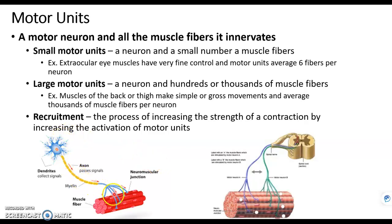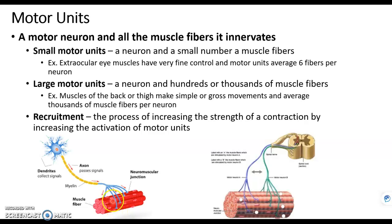Here we have a neuron and here we have muscle fibers. In previous videos we looked at the neuromuscular junction where the axon terminal meets up with a muscle fiber. In this image we see multiple — one, two, three, five — neuromuscular junctions.